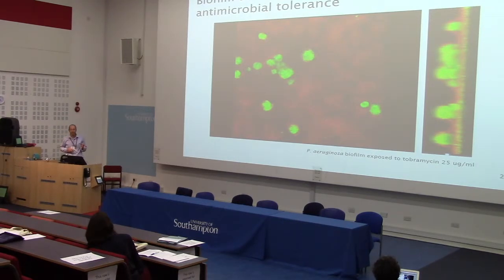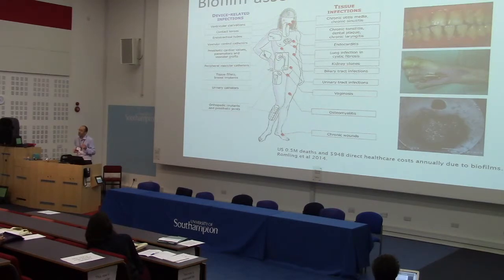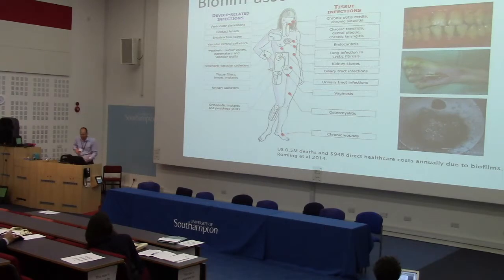There are 10 to the 3, 10 to the 4 cells in each of these clusters. This means that there are many persistent, hard-to-treat infections associated with biofilms. Examples are chronic wounds, lung infection, and cystic fibrosis, along with very many healthcare-associated costs that result from these biofilm infections.